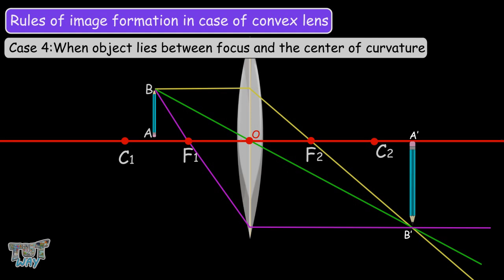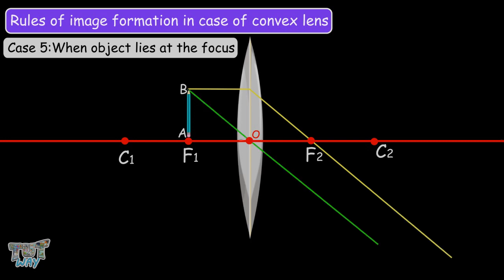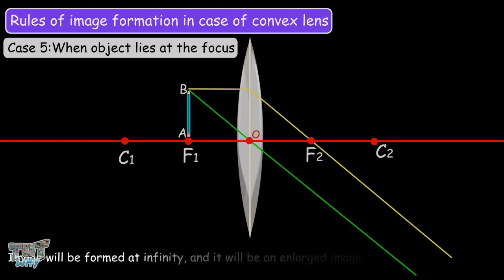The fifth case is when the object lies at F1. The ray parallel to the principal axis refracts and passes through F2. The ray through the optical center emerges without deviation. These rays meet at a point at infinity, so the image is formed at infinity. It will be highly enlarged.